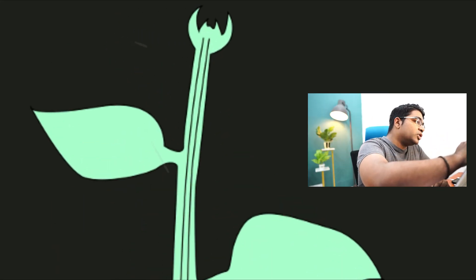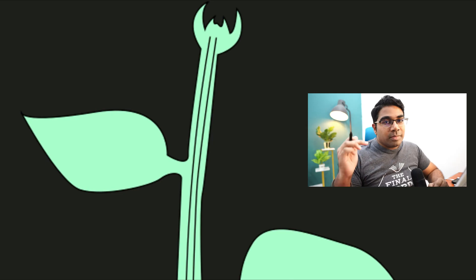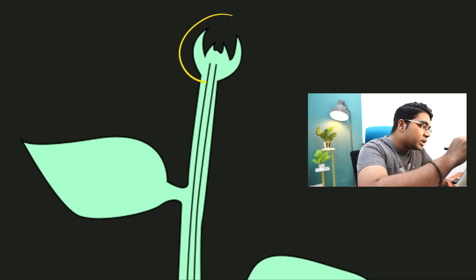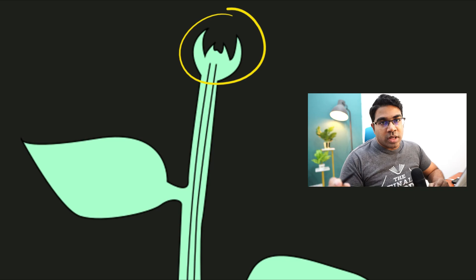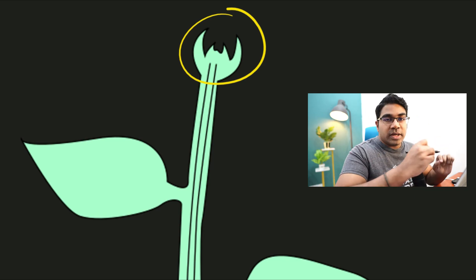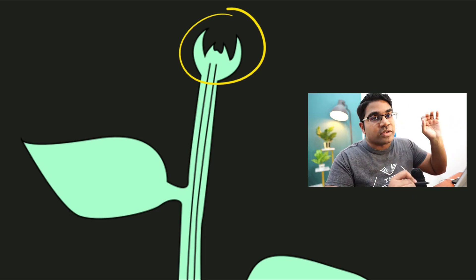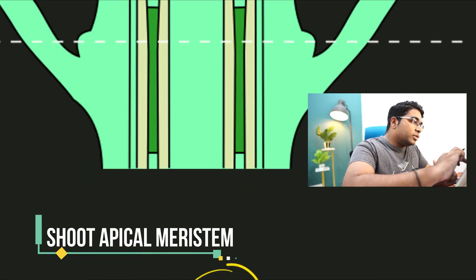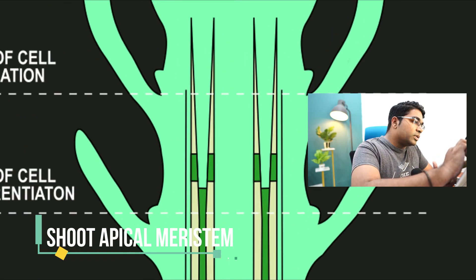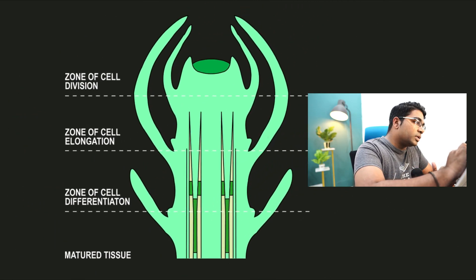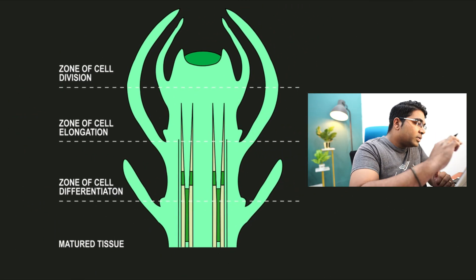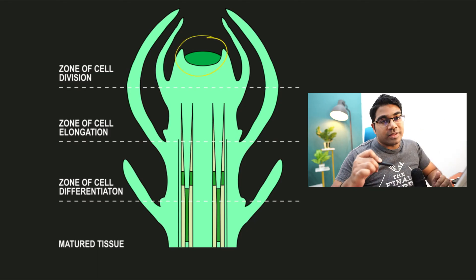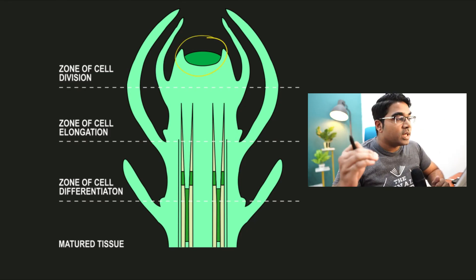Apical meristems are present in both the shoot and the root. The meristematic tissue present in the shoot is known as the shoot apical meristem. Let's zoom into the shoot — this is what the shoot would look like. We start with this area right at the very tip of the shoot, and this is where the shoot apical meristem lies.